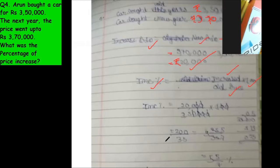Yeah, so 20,000 upon 3,50,000. Zero, zero cancel. Three, four zeros cancel. 20 upon 35. You could have canceled these two also by five. Very good.